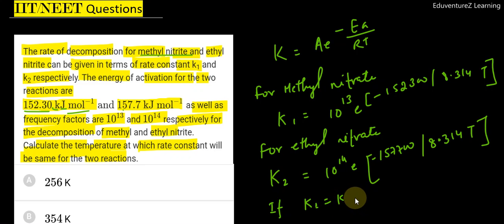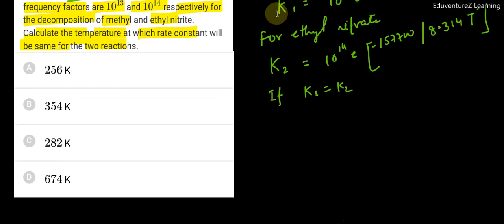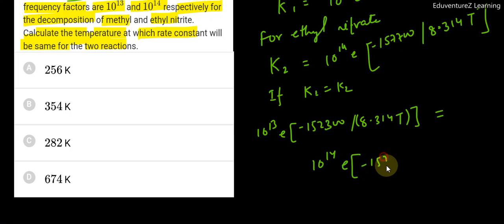K1 equals to K2. If we start working on this, then we can see some changes. 10 to the power 13 E minus 152300 by 8.314 T equals to 10 to the power 14 E minus 157700 by 8.314 T.